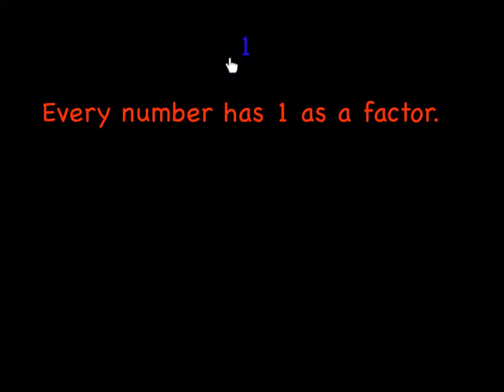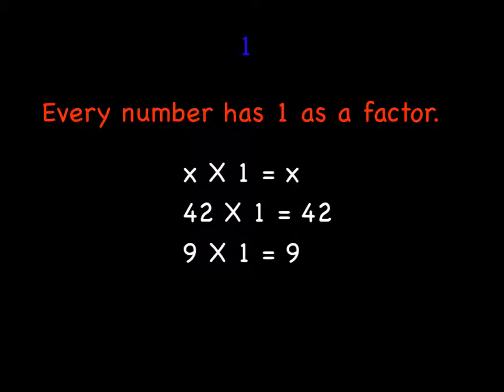One might be the easiest of all. Every number has one as a factor, which means if you think of it in terms of algebra, x can be any number, and any number times one equals that same number. 42 times 1 is 42. 9 times 1 is 9. So no matter what I put in for x, if I multiply it by one, I'm going to get that same number on the other side.